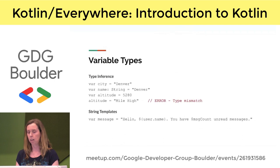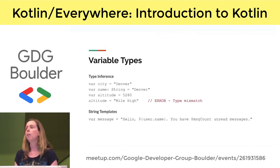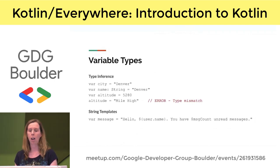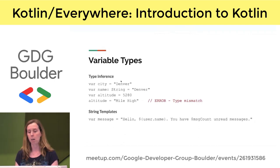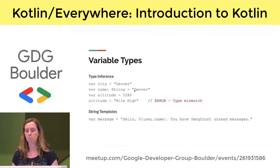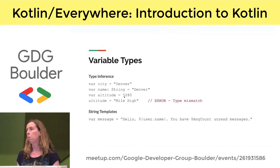Starting with the basics: with variable types in Kotlin, all variable types are objects — there are no primitives like in Java. You still have your ints, longs, and booleans, but they are objects. Kotlin also uses type inference like Python. You don't need to say what type your variable is — you can just give it a value and Kotlin will figure it out. If you want to explicitly declare the type, you put it after the variable name with a colon. Once your variable has a type, you can't change it.